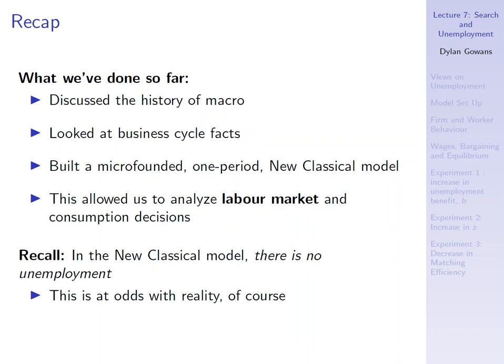Recall that in the new classical model there is no unemployment. We have business cycle fluctuations, but wages adjust such that the labor market is always in equilibrium and labor supply equals labor demand. Of course, this is not true in reality — there is unemployment almost constantly and it fluctuates significantly.